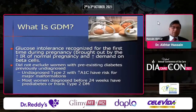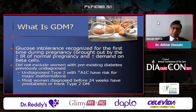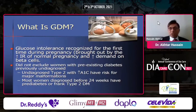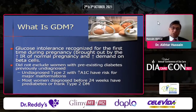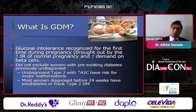So what is GDM? It is glucose intolerance recognized for the first time during pregnancy, brought about by insulin resistance of normal pregnancy or increased demand on beta cells. This definition does not exclude women with pre-existing diabetes that was previously undiagnosed. Undiagnosed type 2 diabetes with higher A1c carries risk for major malformations, and most women diagnosed before 24 weeks have pre-diabetes or frank type 2 diabetes.